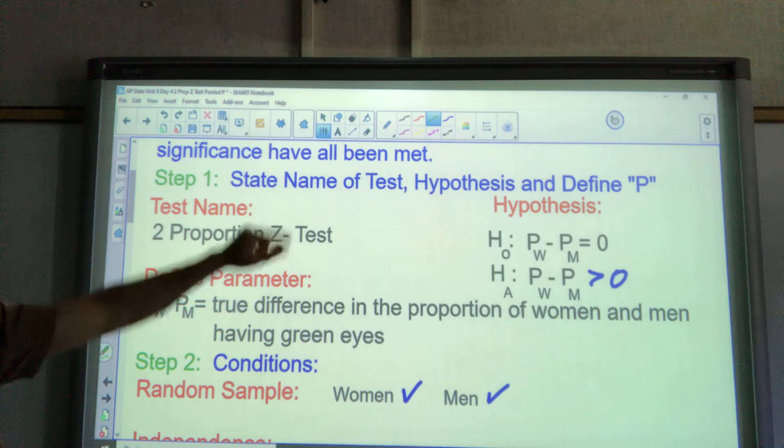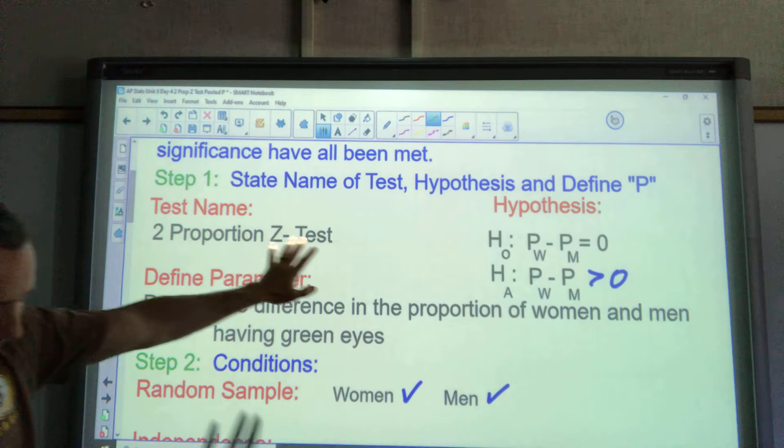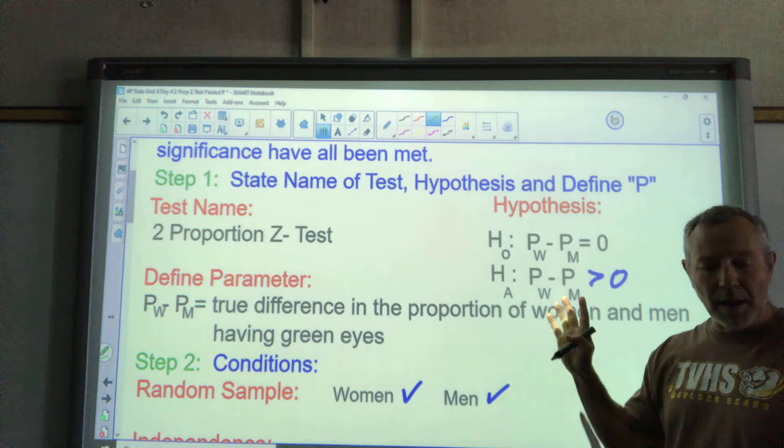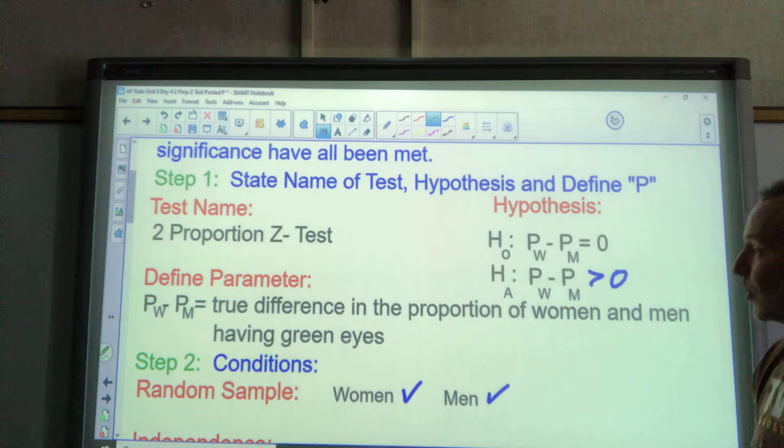Our steps are the same as always. Step one: state the name of the test, hypothesis, and define your parameter. Our name is a two-proportion Z test. When I come over here, this is kind of easy. I have women and men. Since the women have a higher proportion of green eyes, I put them first.